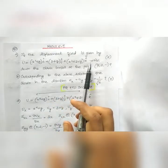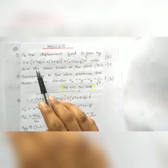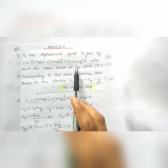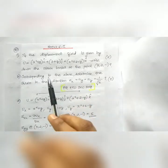Analysis of strain. So if the displacement field is given by U is equal to (x² + y) into i cap plus (3 + z) into j cap plus (x² + 2 - y) into k cap, write down the strain tensor at the point (3, 2, -1).